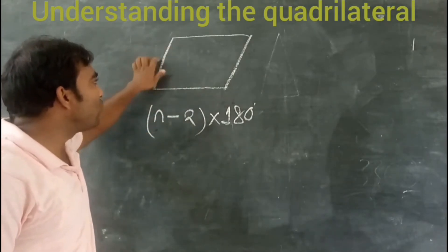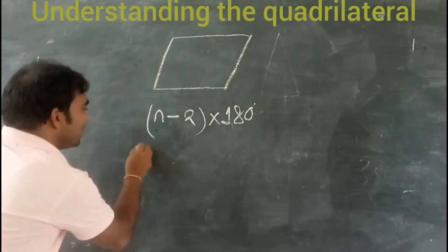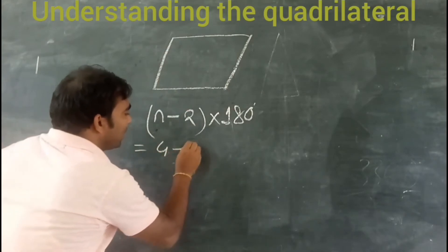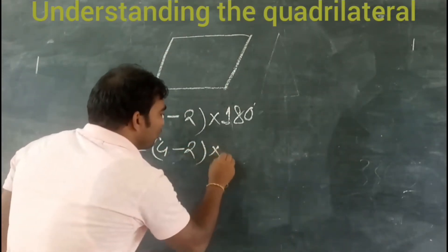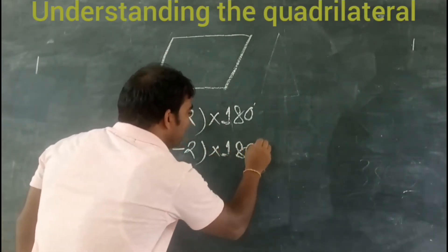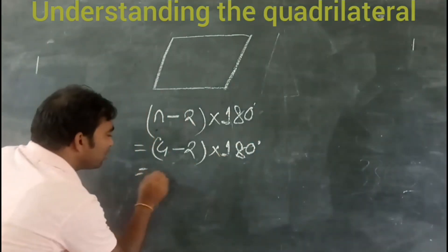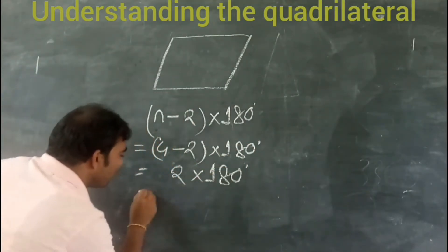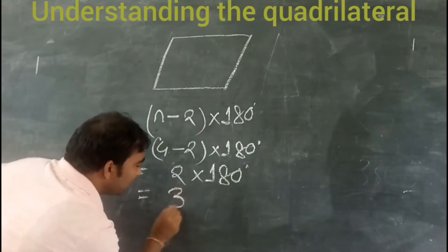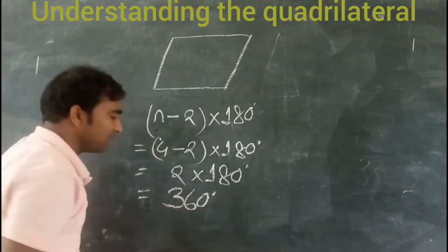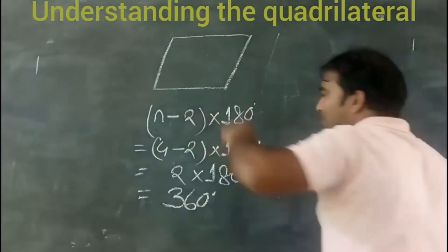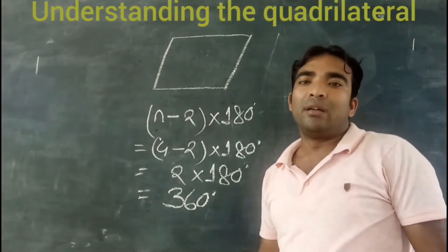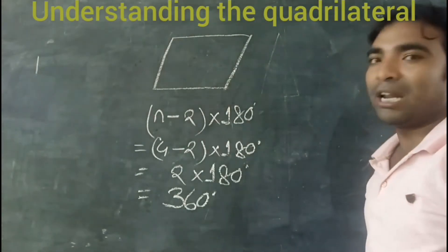For example, if the polygon has 4 sides, the sum of the interior angles will be (4 − 2) × 180 degrees, which is 2 × 180 degrees, that is 360 degrees. So the sum of the interior angles of a quadrilateral is 360 degrees.